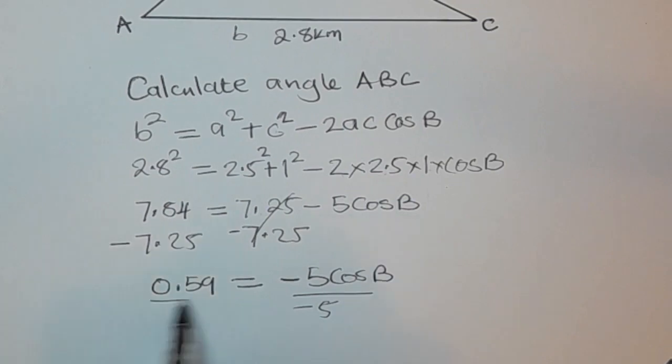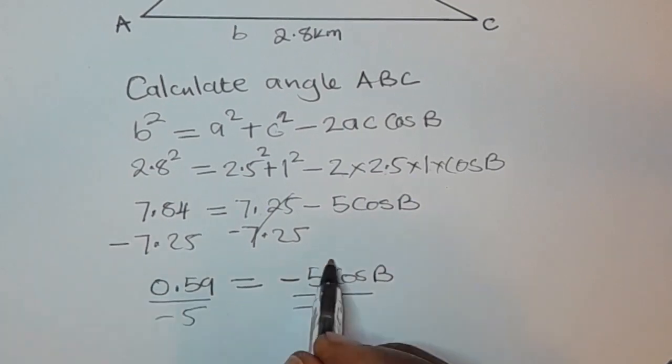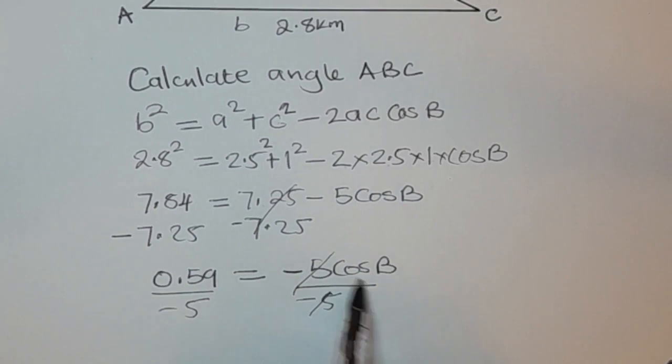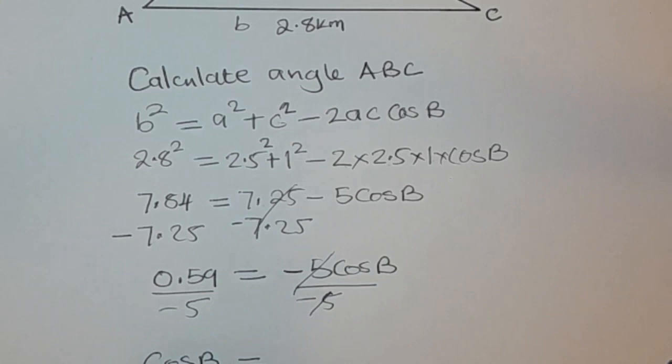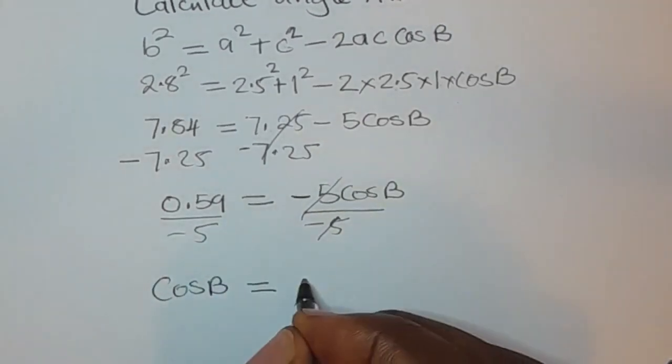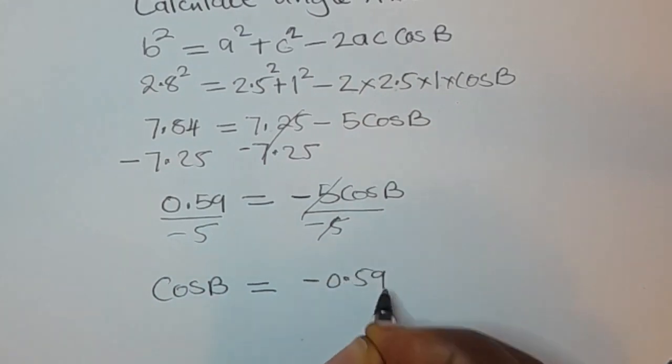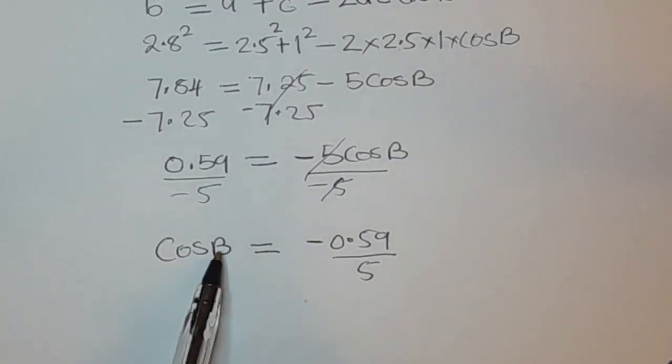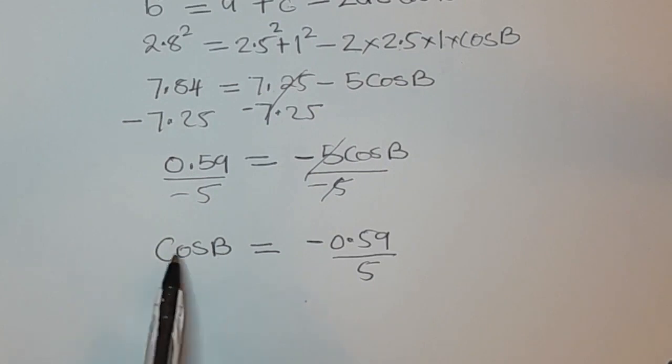Okay, our aim is to remain with B, so we are going to divide both sides by negative 5. So we have cos B is equal to negative 0.59 over 5. So for us to find what angle B is, we are going to multiply through by cos inverse.